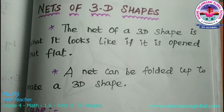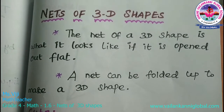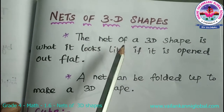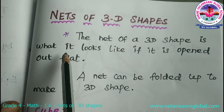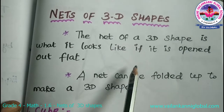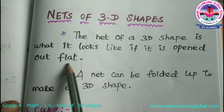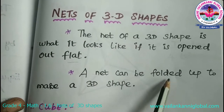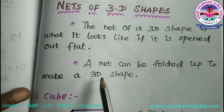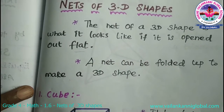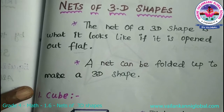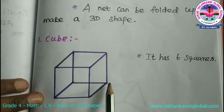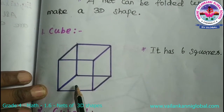Hi students, today we are going to discuss about the topic of nets of 3D shapes. The net is what a shape looks like if it is opened out flat — the flat is always 2D. A net can be folded up to make a 3D shape, so if you want to make 3D shapes, we should use 2D shapes definitely.